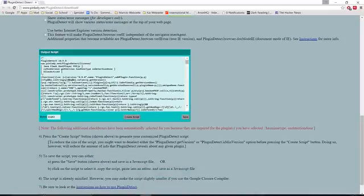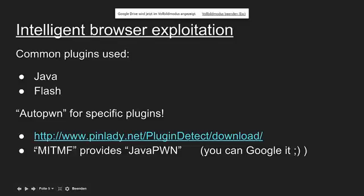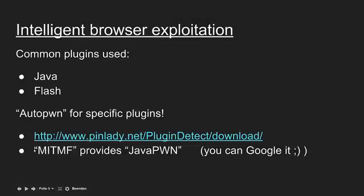This may sound difficult, but it's not quite that hard. One example of doing this — even using an existing tool — is mitemf, which provides the option Java pawn. This is an automatic script that finds the Java version and then exploits that Java version, allowing you to hack the machine. You can Google mitemf — I won't show it here since it's easy to find. Just type in mitemf, don't forget the F, and then Java pawn.